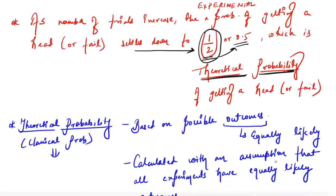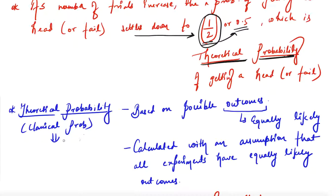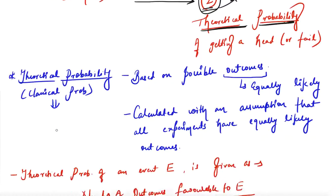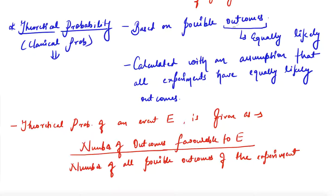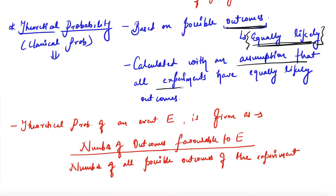That value of 0.5 or one-half is nothing but the theoretical probability of getting a head or a tail. Theoretical probability is also known as classical probability. It is based on possible outcomes — not on outcomes we actually observe. Always remember that whenever you calculate theoretical probability, all outcomes are assumed to be equally likely.